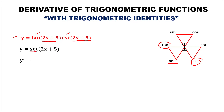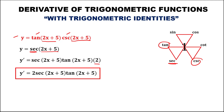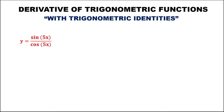Now we find the derivative. The derivative of secant is secant times tangent, then times the derivative of 2x plus 5, which is 2. Putting the constant first, this gives y prime equals 2 times secant times tangent.